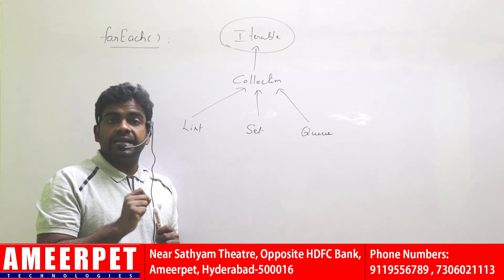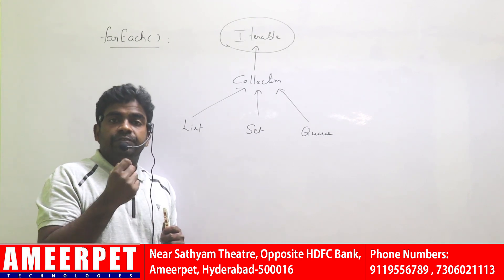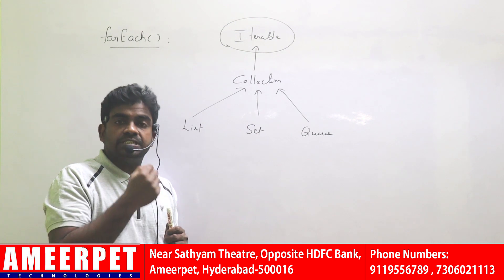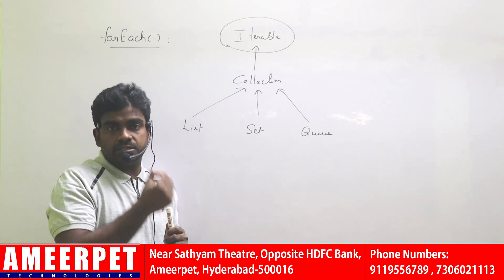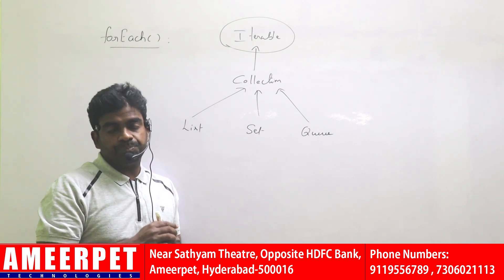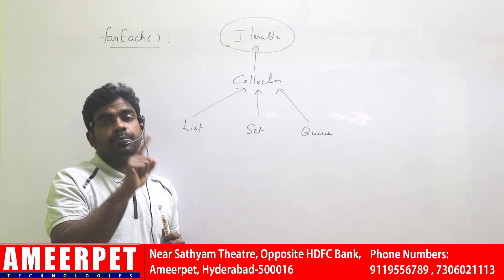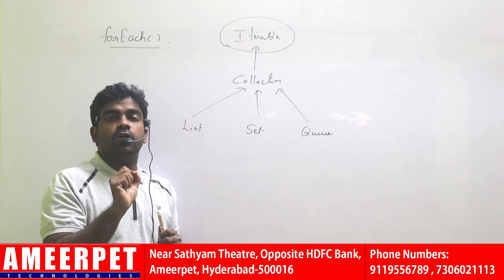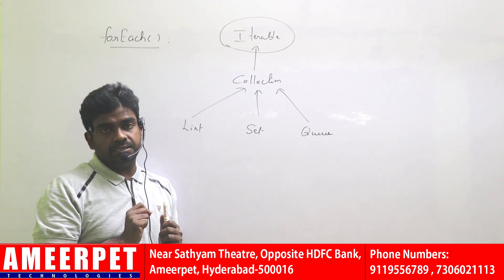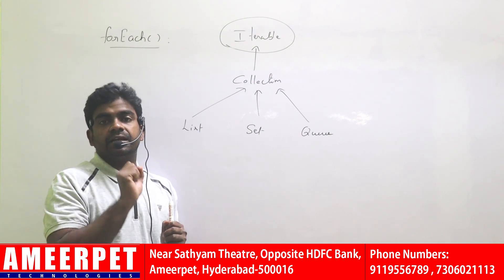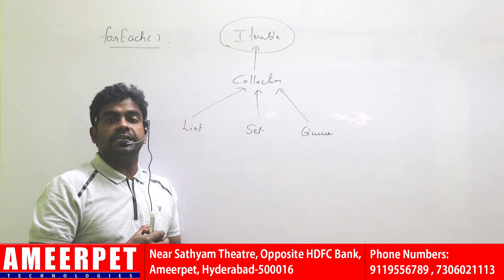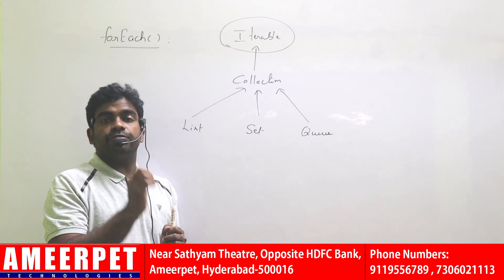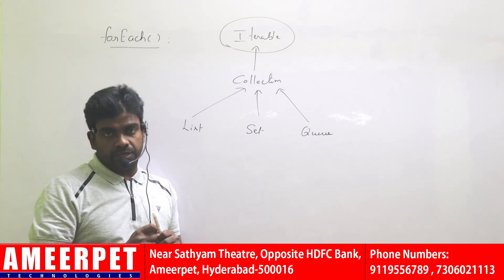But there is a rule: Iterable is an interface. Inside an interface, can we define any method which has logic? No, it's impossible. This is the main reason they introduced default methods in interfaces from JDK 8 — just because of the forEach method.